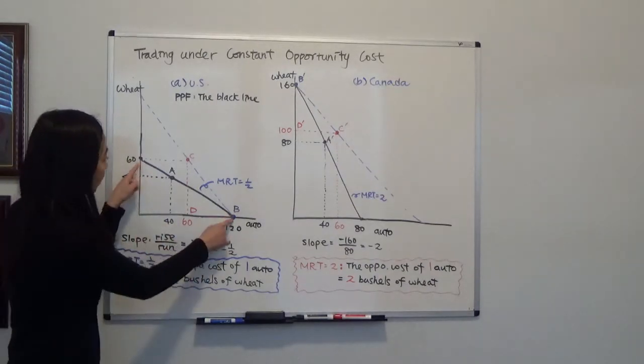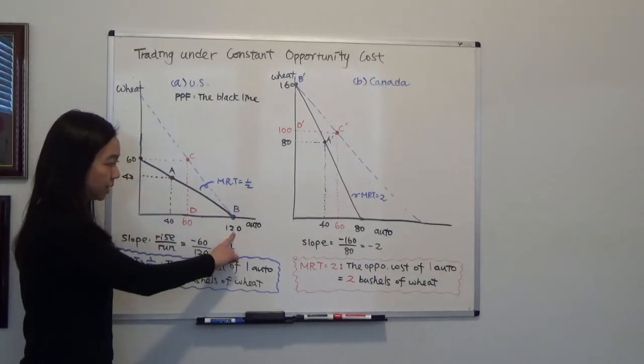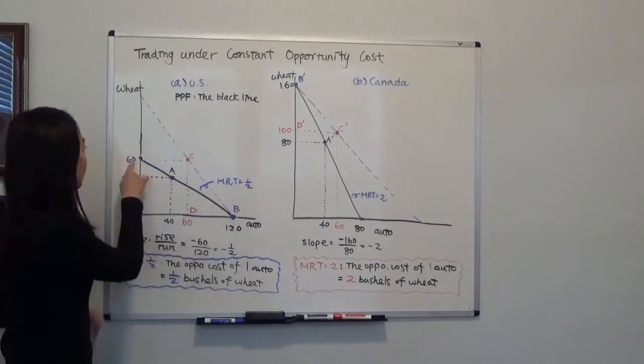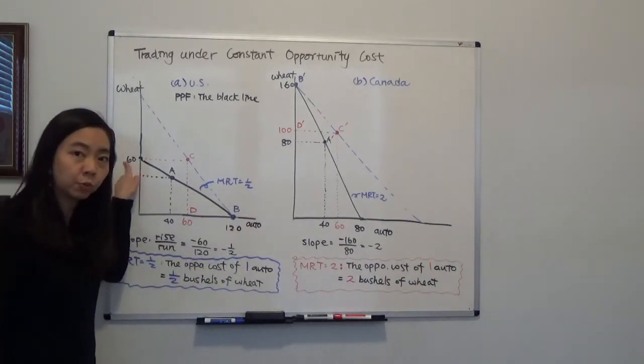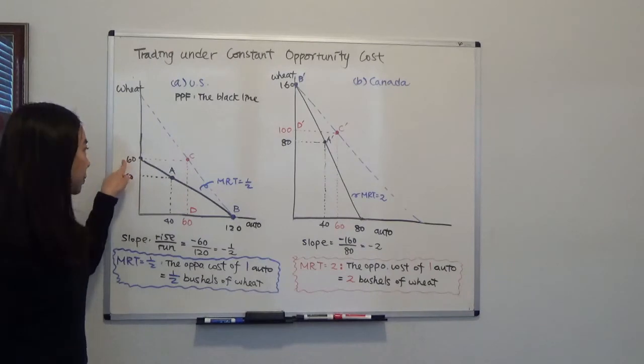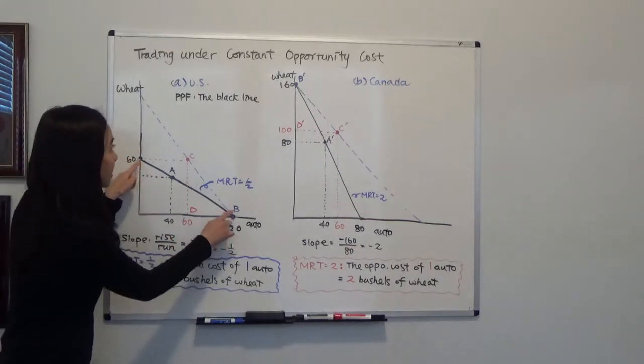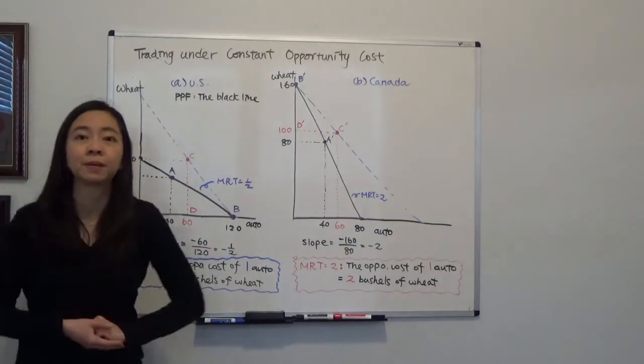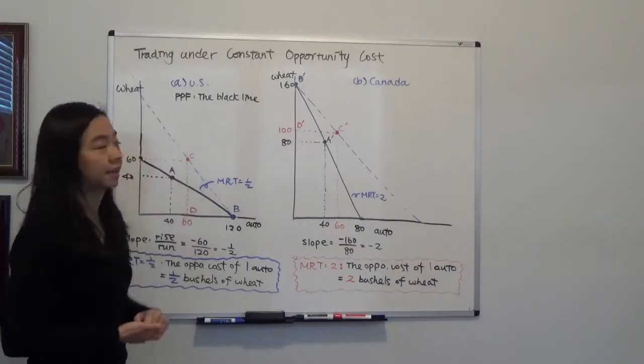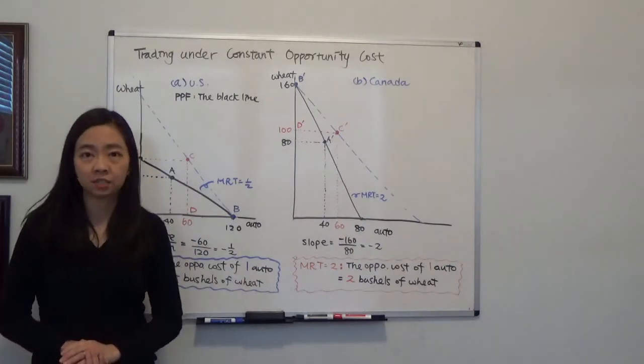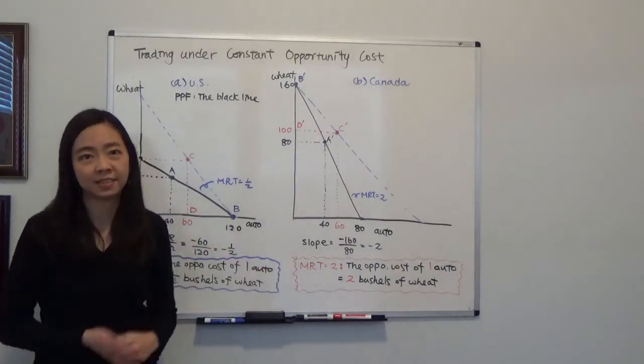Then we connect these two points, 120 autos and no wheat, and also that point that is 60 bushels of wheat and no automobile. We connect the two points, then we get the production possibility frontier, we call that PPF, or we can call that production possibility curve, that's PPC, it's the same thing.